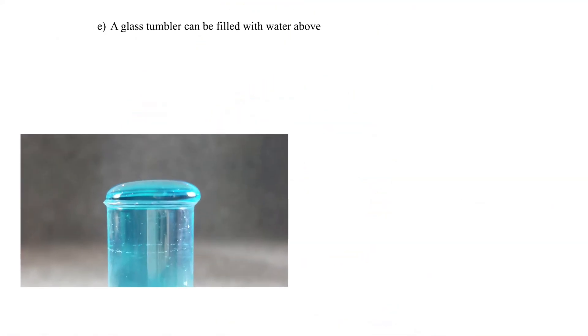E. A glass tumbler can be filled with water above the brim. This is because the surface of the water behaves as if it is a thin elastic membrane as it stretches to hold more water.